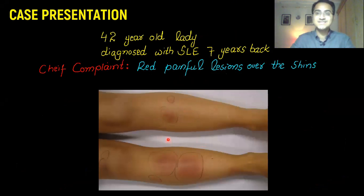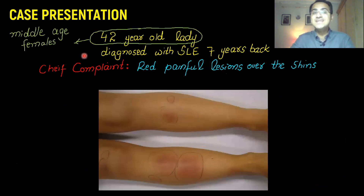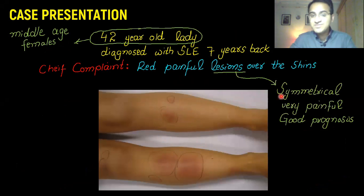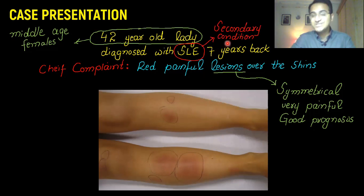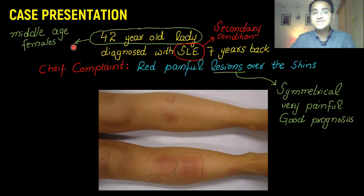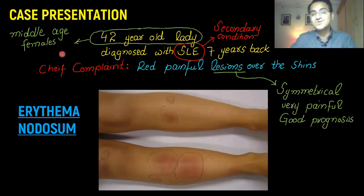Looking at this case, the patient is a middle-aged female with lesions that are symmetrical — meaning on both legs — and painful. The patient also has a secondary condition like SLE. All these things — middle-aged female, symmetrical painful lesions over the shins, and an underlying autoimmune disease — point toward the diagnosis of erythema nodosum.